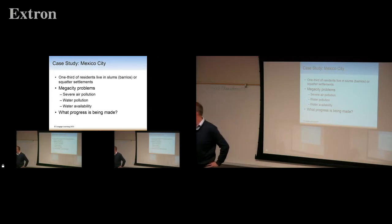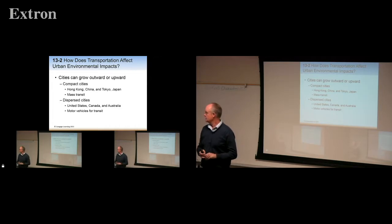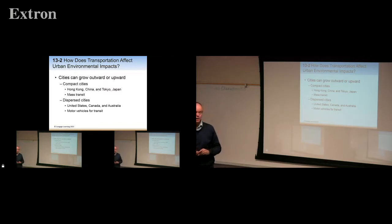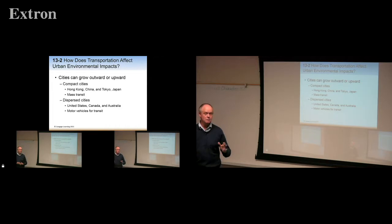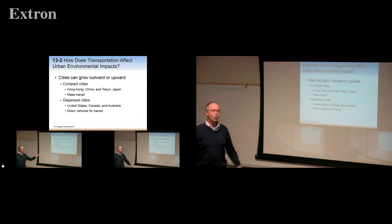Megacities have severe pollution, water pollution, and water availability problems. Cities can grow outward or upward — compact cities growing upward in high-rises versus dispersed cities spreading outward. The problem with going sideways and dispersing is that you're going to need more motor vehicles, more energy, and all of that to transport people.